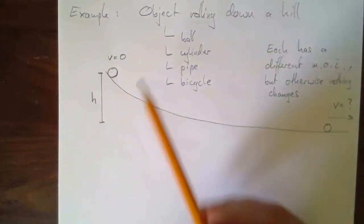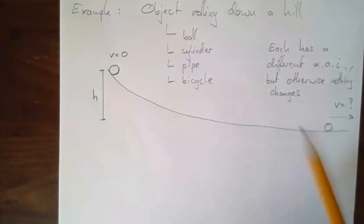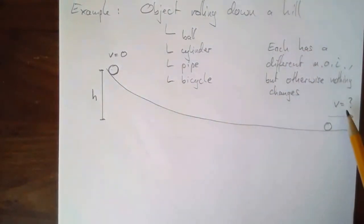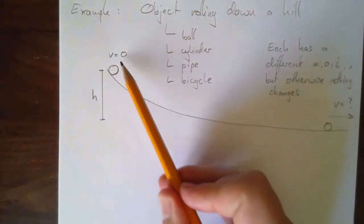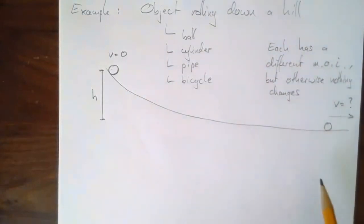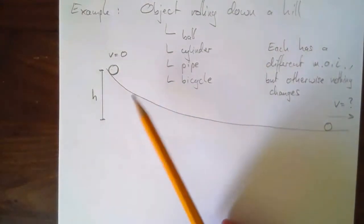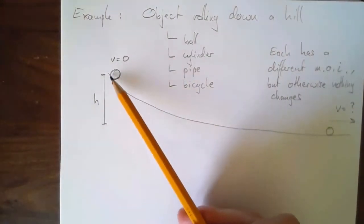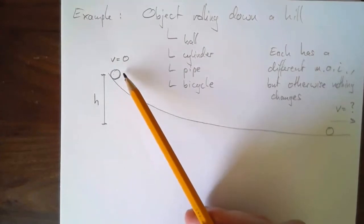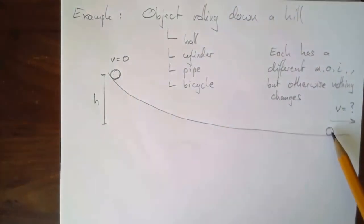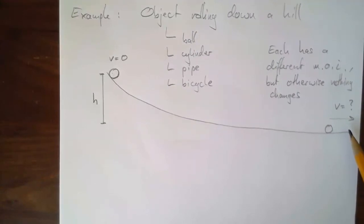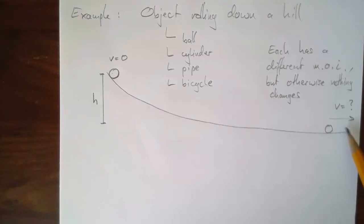Let's use energy conservation to find the speed at the bottom, assuming we start with speed zero. In the past, without rotation, you'd say potential energy at the top plus zero kinetic equals zero potential at the bottom plus unknown kinetic, and solve for speed. We're going to do exactly the same thing, except we have to take into account the rotational kinetic energy.